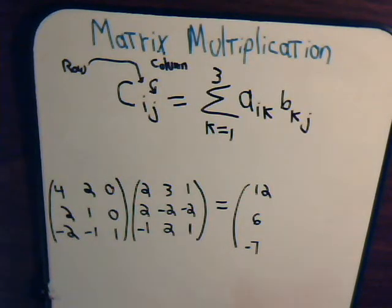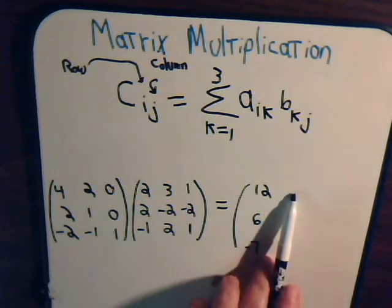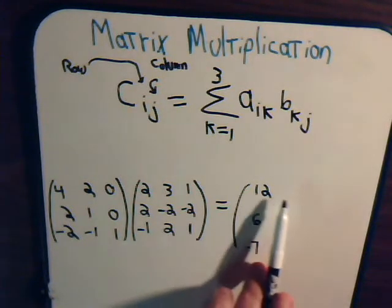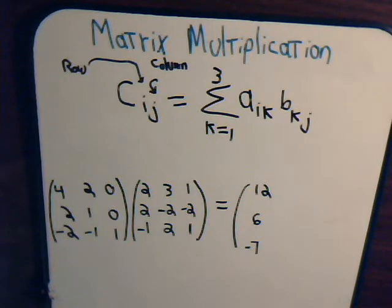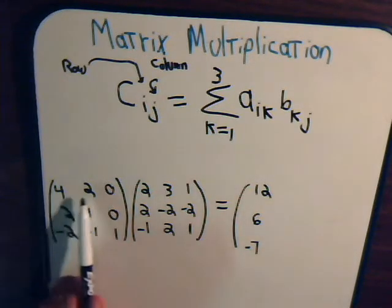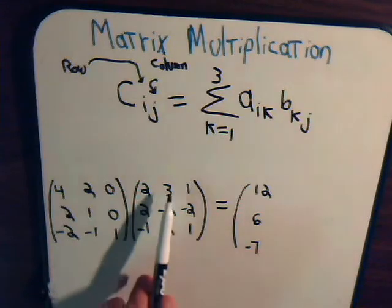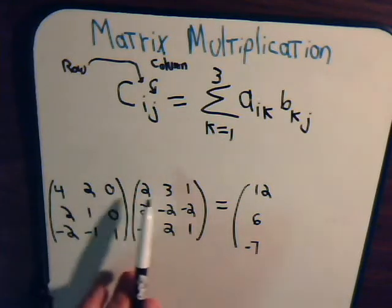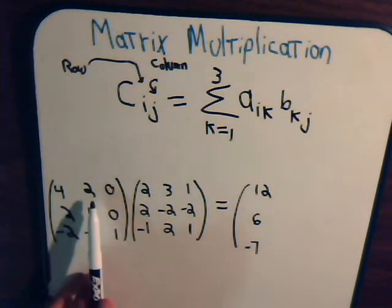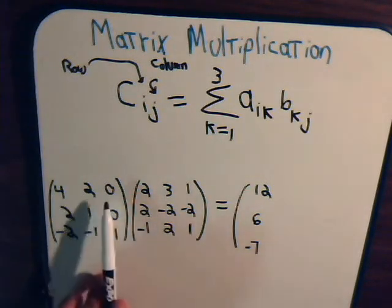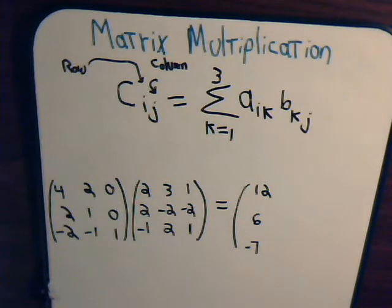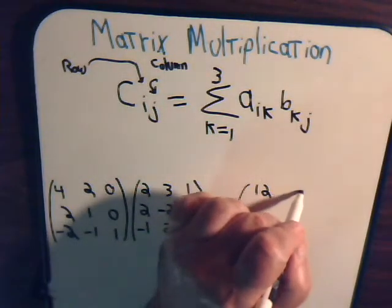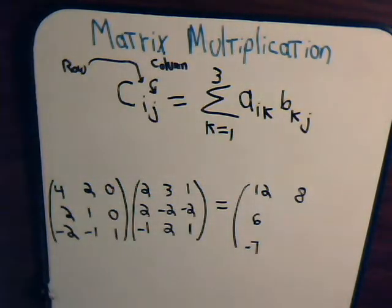Now, to get the next number — the second column number in the first row of the matrix — we go back with the first row, go across, and now go down the second column. Here we have four times three is twelve, minus four is eight, that's zero, so this next entry is eight.